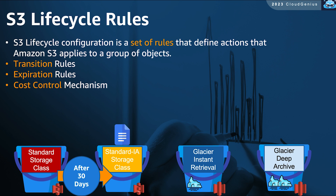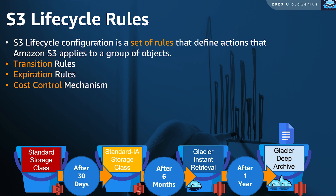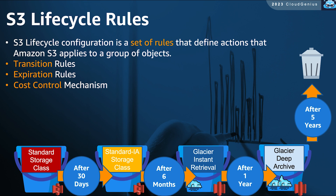Then after 6 months, it becomes rarely accessed, so you move it to Glacier Instant Retrieval, just in case someone needs to retrieve it. Then maybe after 1 year, the odds of someone requesting access become less and less, so you move it to Glacier Deep Archive and keep it there for 5 years. Then after that, you automate the deletion of such an old object. This is an excellent mechanism to automate the transitioning and deletion of your objects and control the costs.